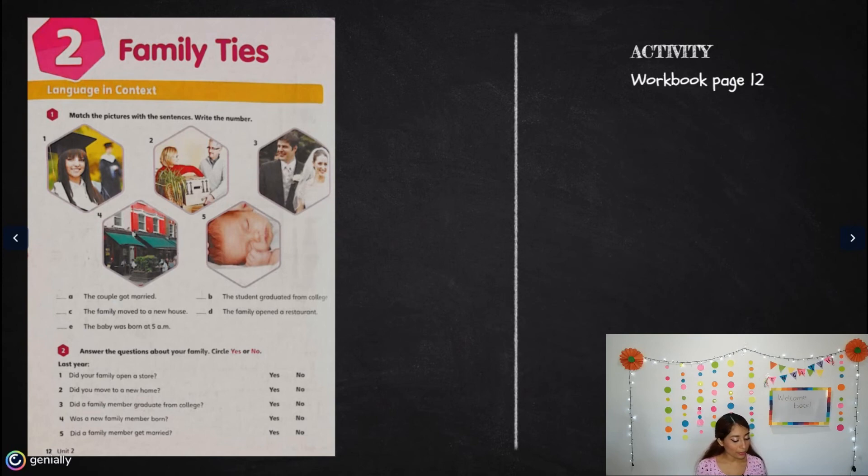Number two: answer the questions about your family, circle yes or no. This exercise is about you, your family, yourself. Number one: did your family open a store? Maybe I would say no, I circle no. Number two: did your family move to a new home? Last year, no, I circle no. Number three: did a family member graduate from college? Yes, me. Number four: was a new family member born? No. Number five: did a family member get married? No. That's it, you just need to circle yes or no. It's super easy and it won't take you so long.